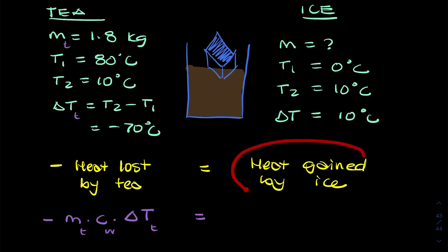Now the heat gained by the ice - remember the ice needs to melt and then warm up to 10 degrees Celsius, so there's two stages. While it's melting, the heat gained is simply the mass of the ice multiplied by the latent heat of fusion of the ice. But after it's melted, it's then going to warm up.